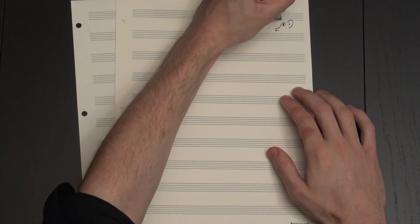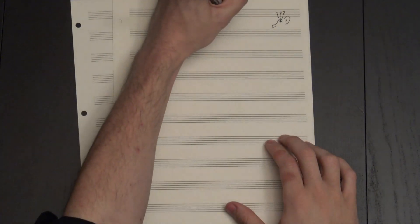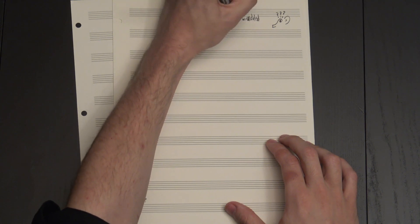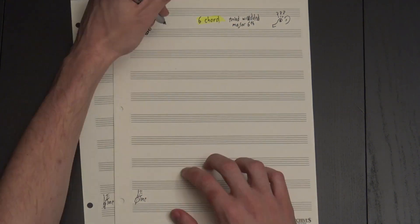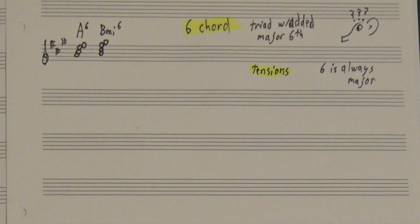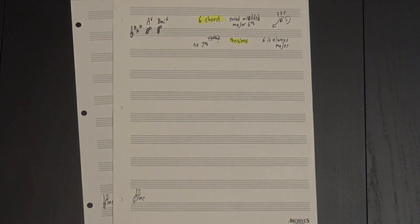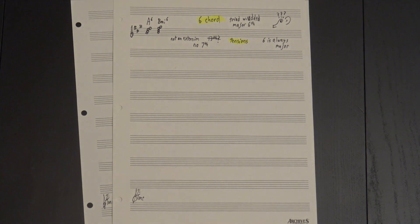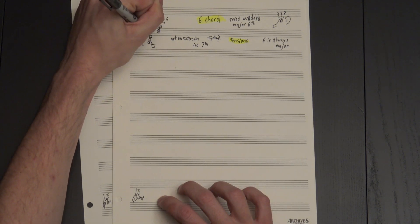Moving on, we come to a slightly confusing chord type: the sixth chord. This is a triad with an added major sixth on top. The triad could be major or minor, but the sixth is major either way. If you watched our tension video, you may know that we usually call this a thirteenth, but because we're not playing the seventh, we don't think of it in the same sort of extended chord tone role. We call it a six instead so the player knows that it's only a triad.